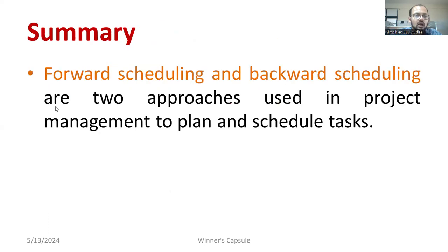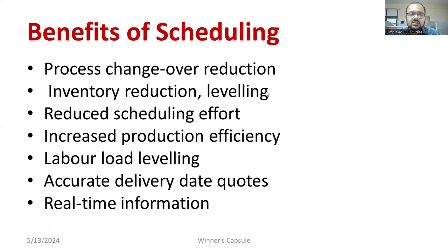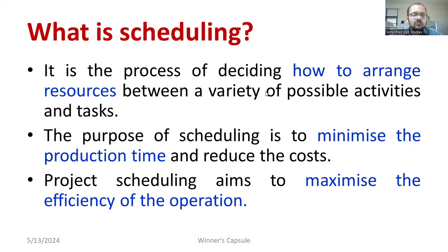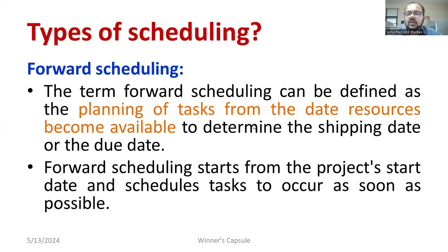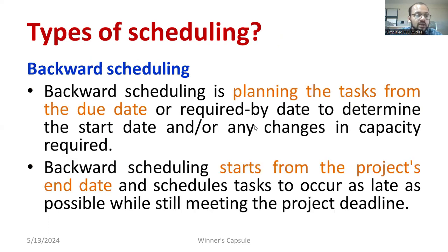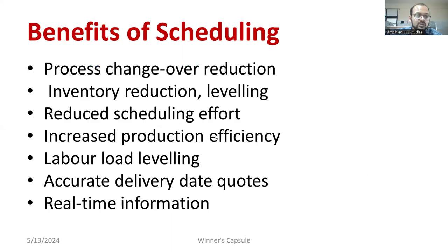In this session, we discussed forward scheduling and backward scheduling. Initially, we discussed why scheduling is required, then the types of scheduling. In forward scheduling, whenever resources — men, material, money — everything is available, we schedule and plan to complete the task. In backward scheduling, we work from the due date — from the deadline onwards, we schedule back to the start.